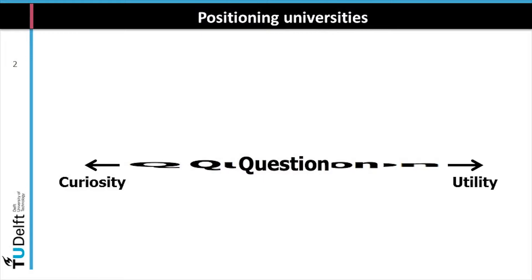If you would start to position universities, you would talk about research universities, and the one dimension you should look at is the question: does the question come from curiosity, or does the question come from usefulness, utility? So are you going to work on a question like where does life come from, or is there life on other planets — or a question like how can I improve the quality of rubber on tires? These are just two examples.